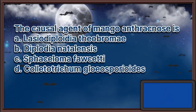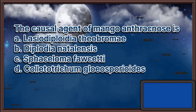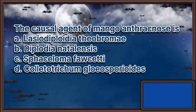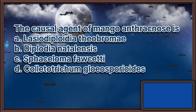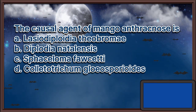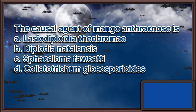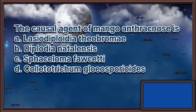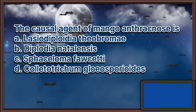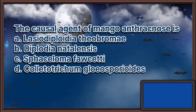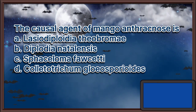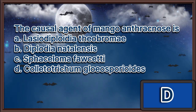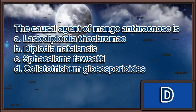The causal agent of mango anthracnose is. A. Lasiodiplodia theobromae. B. Diplodia nautilensis. C. Sphaceloma faceti. D. Colletotrichum gloeosporioides. The answer is letter D.